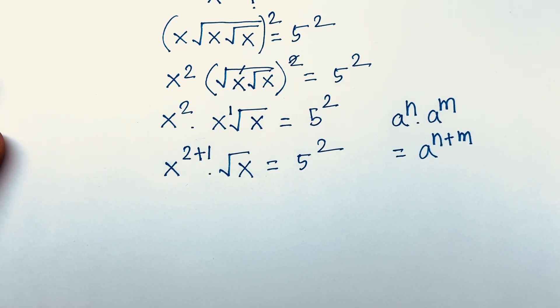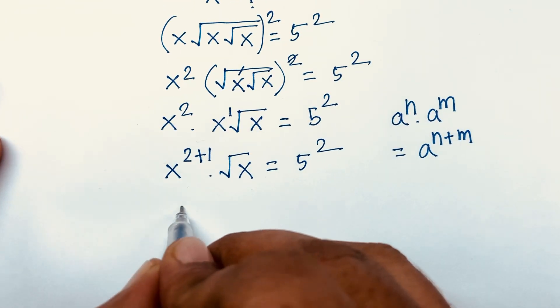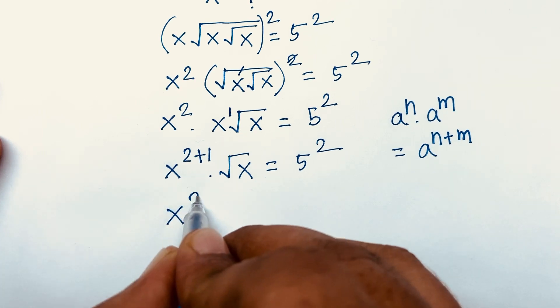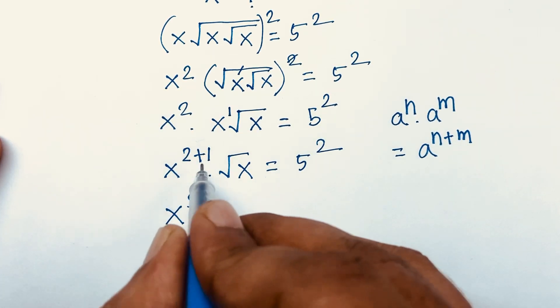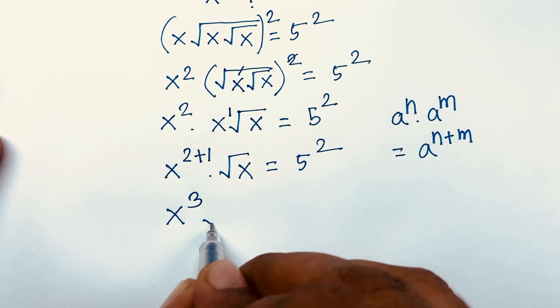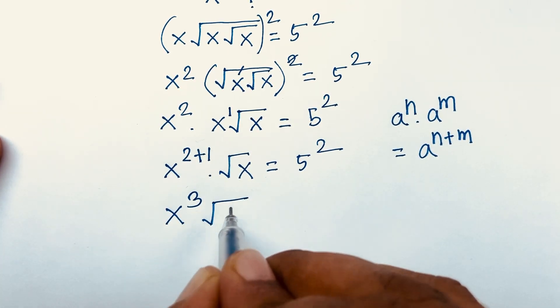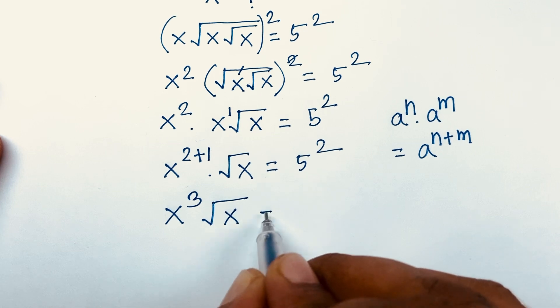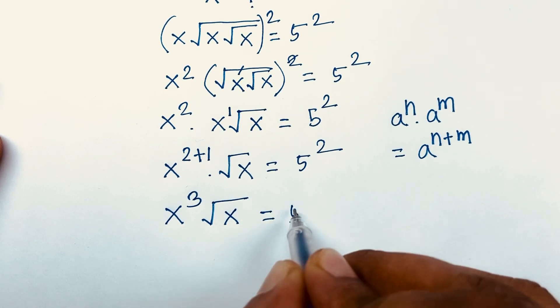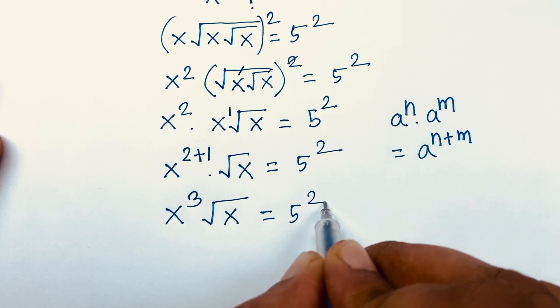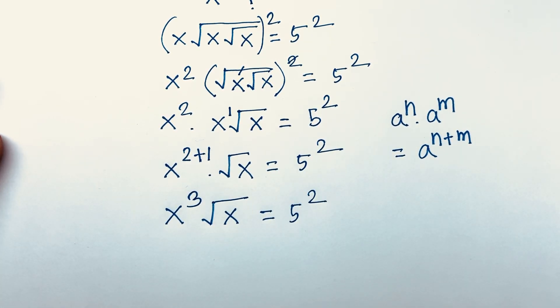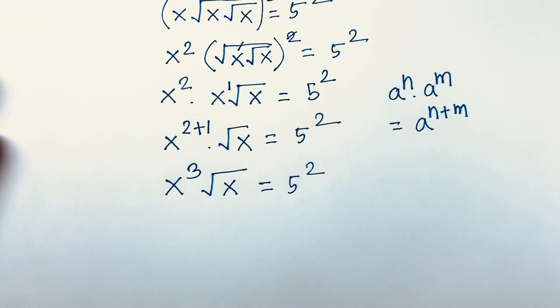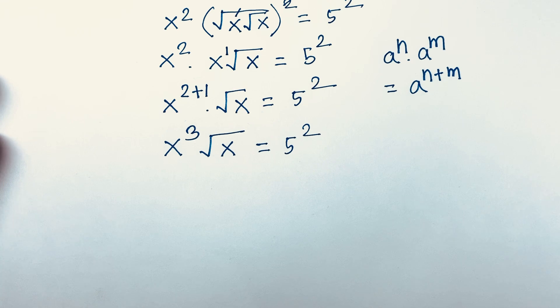Here is x to the power 3, because 2 plus 1 equals 3. So we have x cubed times square root x is equal to 5 squared, which is 25. Then I again use both sides whole square.